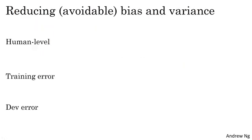To summarize the process: if you want to improve the performance of your machine learning system, look at the difference between your training error and your proxy for Bayes error to get a sense of avoidable bias — just how much better you should be trying to do on your training set. Then look at the difference between your dev error and your training error as an estimate of how much of a variance problem you have — how much harder you should work to make performance generalize from the training set to the dev set.